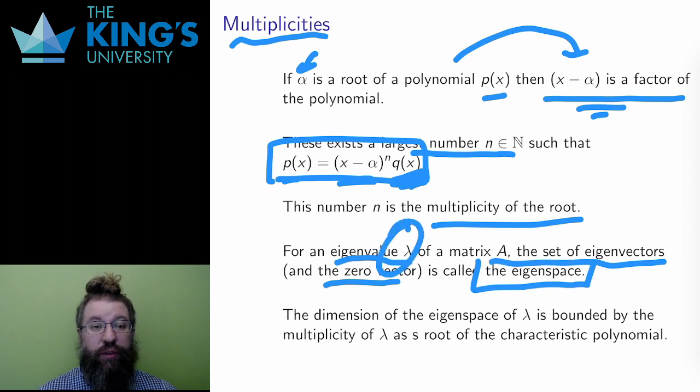Each lambda has its own eigenspace, all the vectors for which it is the eigenvalue, all vectors which are scaled by that number lambda under the matrix action. A natural question is, what is the dimension of each eigenspace?